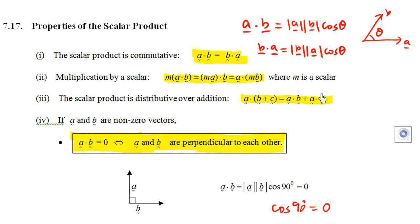The fourth property is a very important property regarding vectors. It says that if a dot b is equal to zero, then a and b are perpendicular to each other. On the other hand, if a and b are perpendicular to each other, then a dot b is equal to zero.